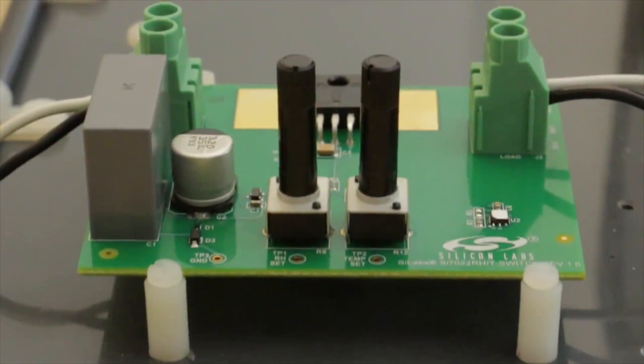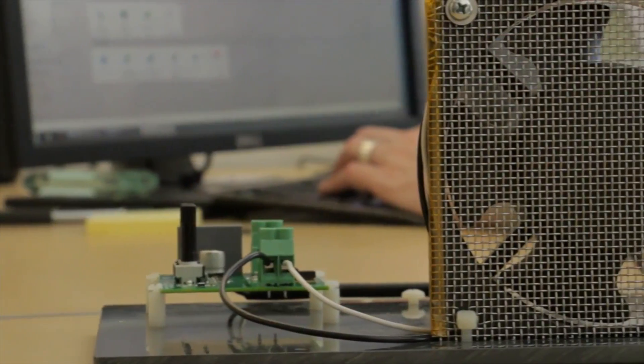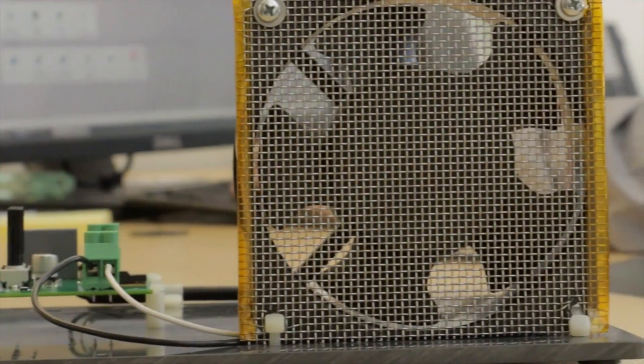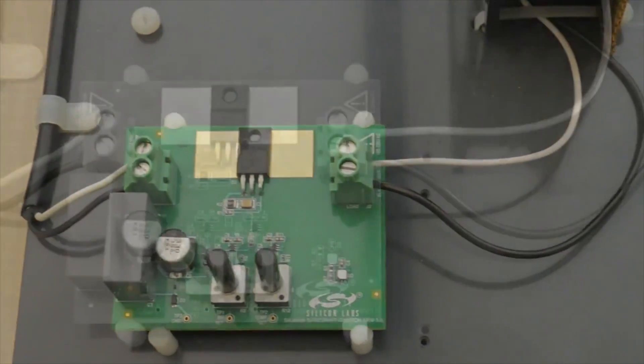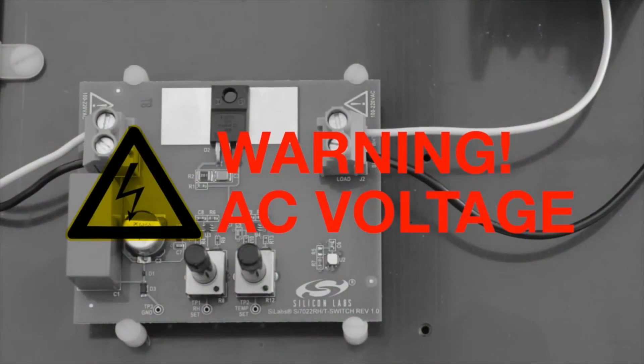So here you have our example design for an AC line switched humidity temperature sensor. The design uses AC line voltages, so we recommend that anything using these kind of voltages be placed in the appropriate grounded or plastic enclosure.